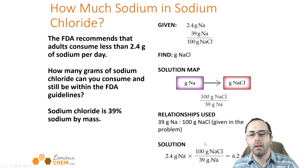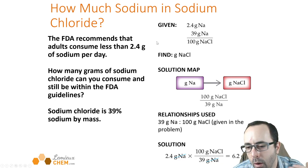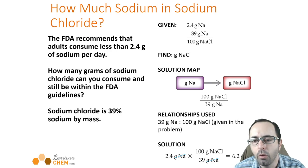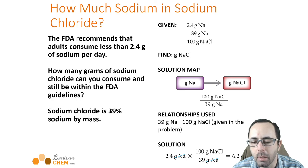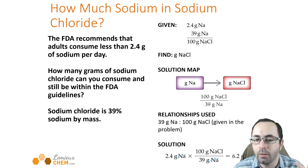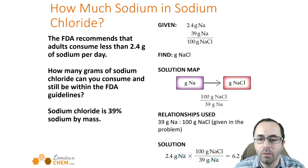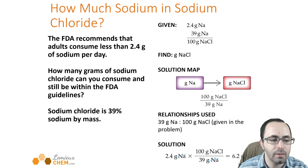That's our intro to the mole and molar mass. In the next lecture, we'll use this to determine how much product we can get from reactants in a chemical reaction — a process called stoichiometry. I'll see you in the next lecture.